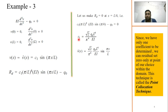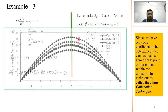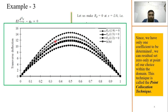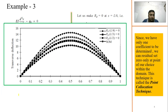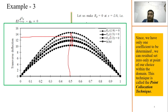Let me show a graph illustrating how results vary. The star-shaped curve is the standard analytical result from strength of materials. The diamond shape is the result when RD = 0 at L/4 — there is significant difference from exact. At L/2, the difference is even larger. At L/3, you get a better result compared to the other two. So the result varies with the choice of collocation point — that is the drawback of this method.